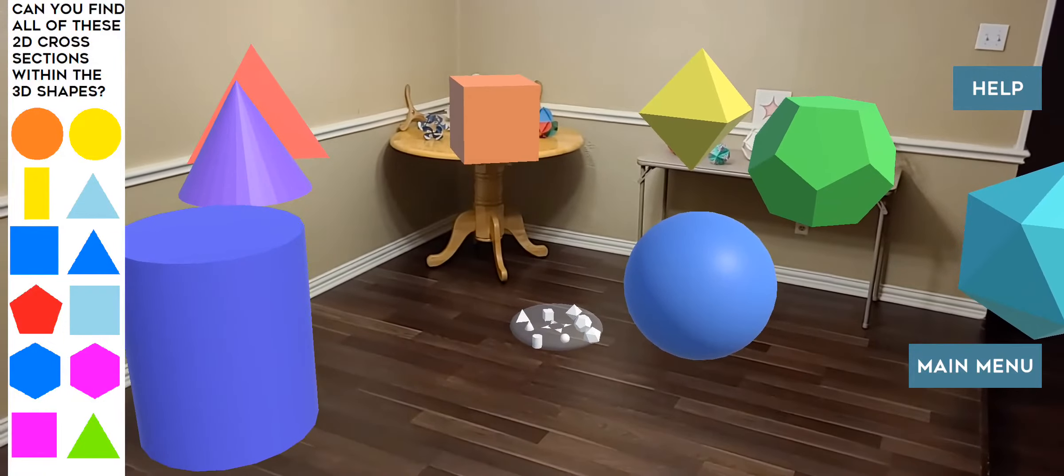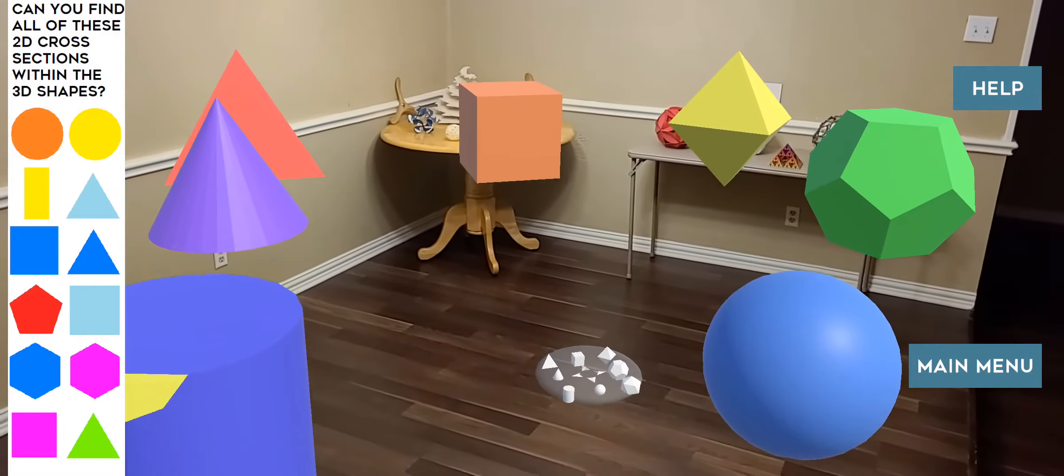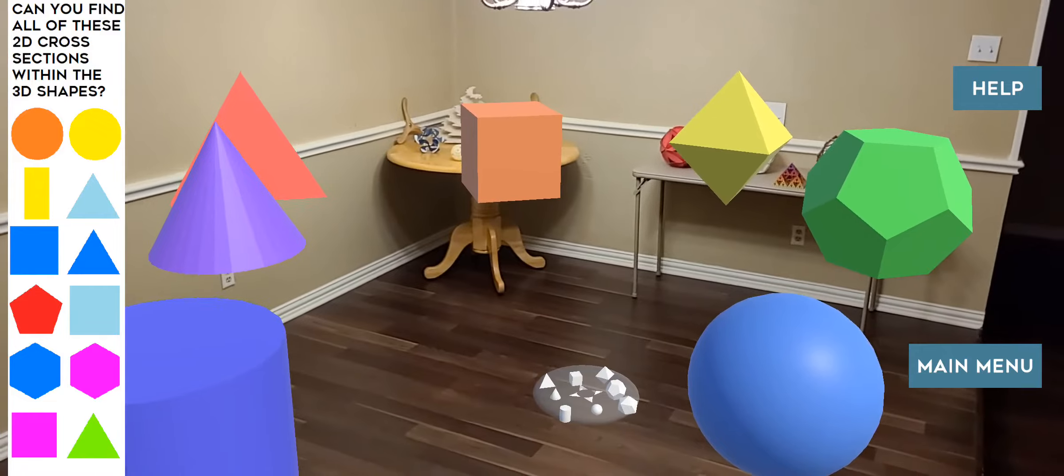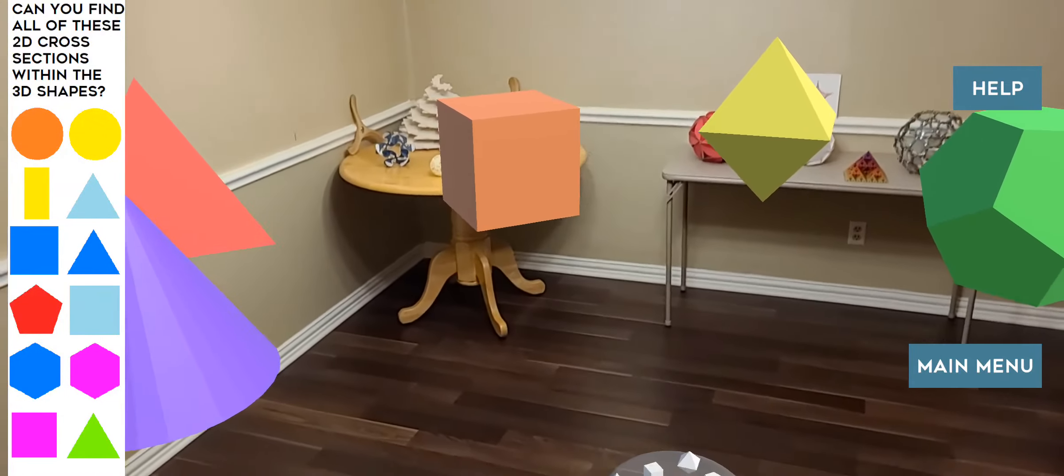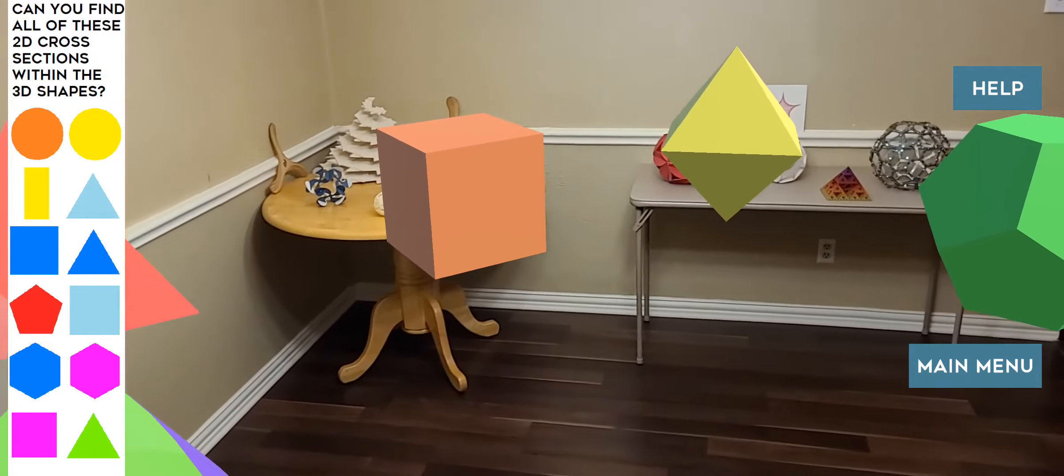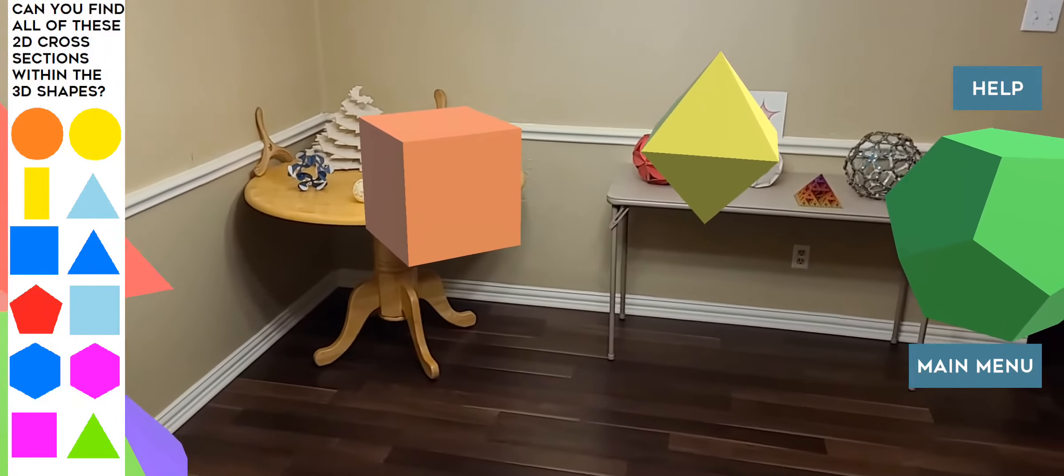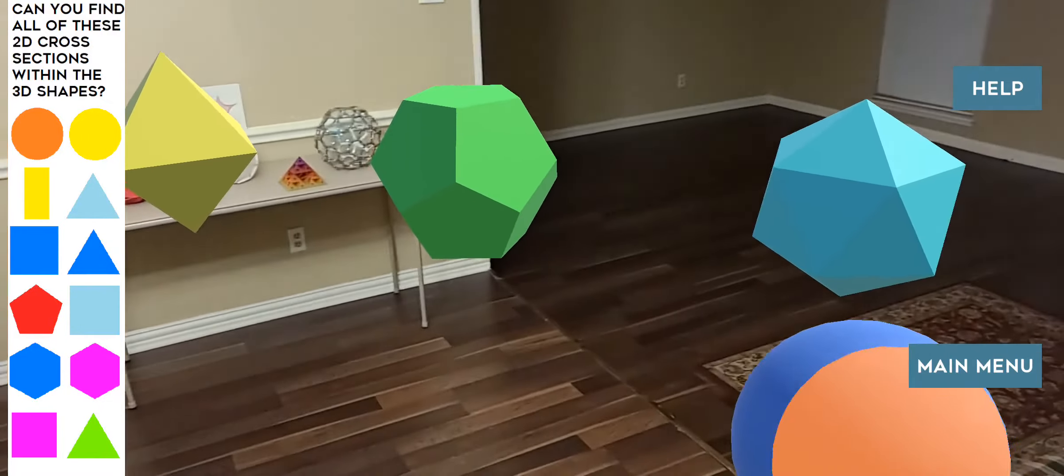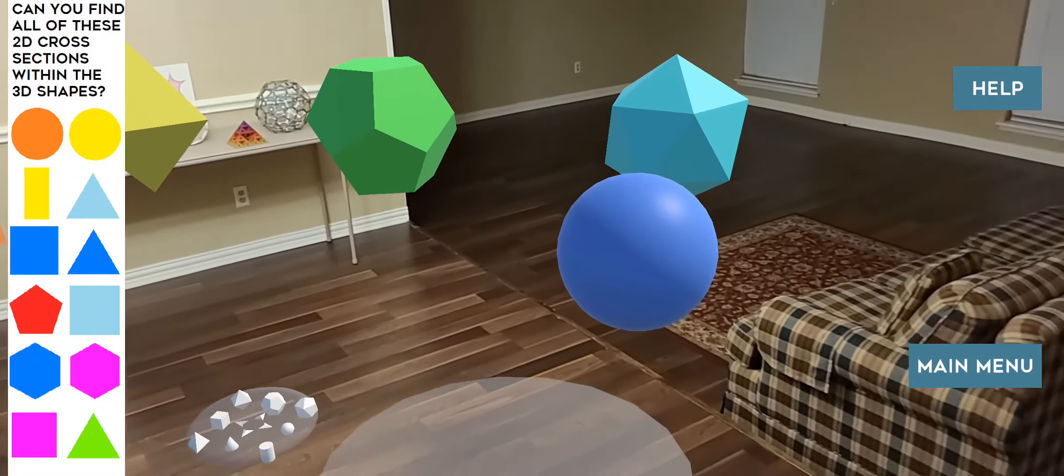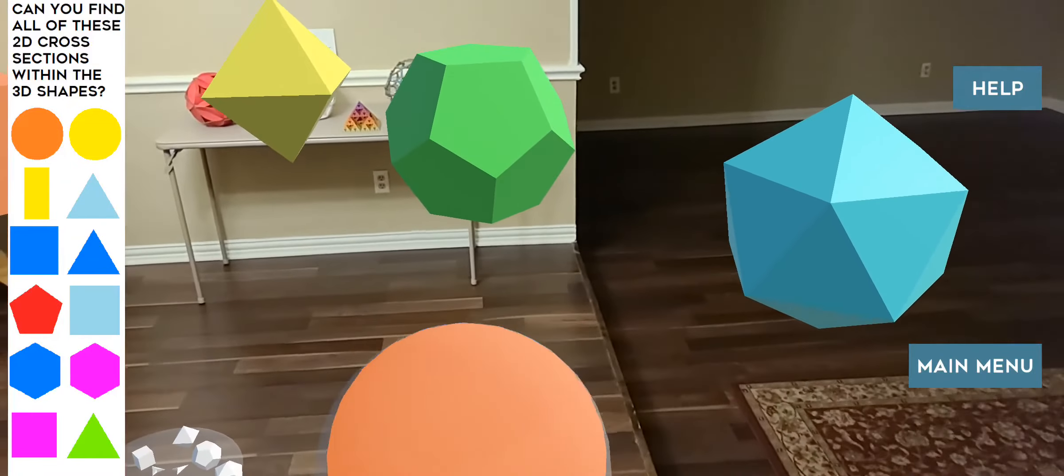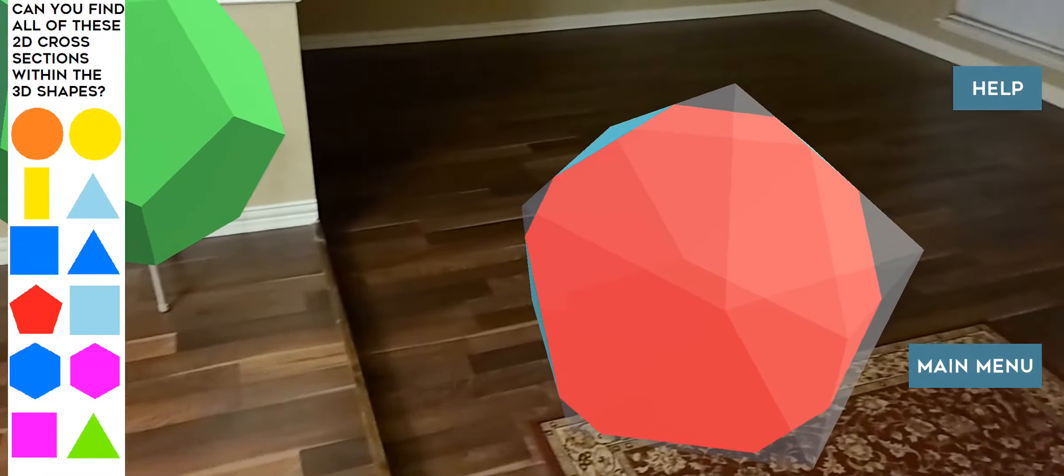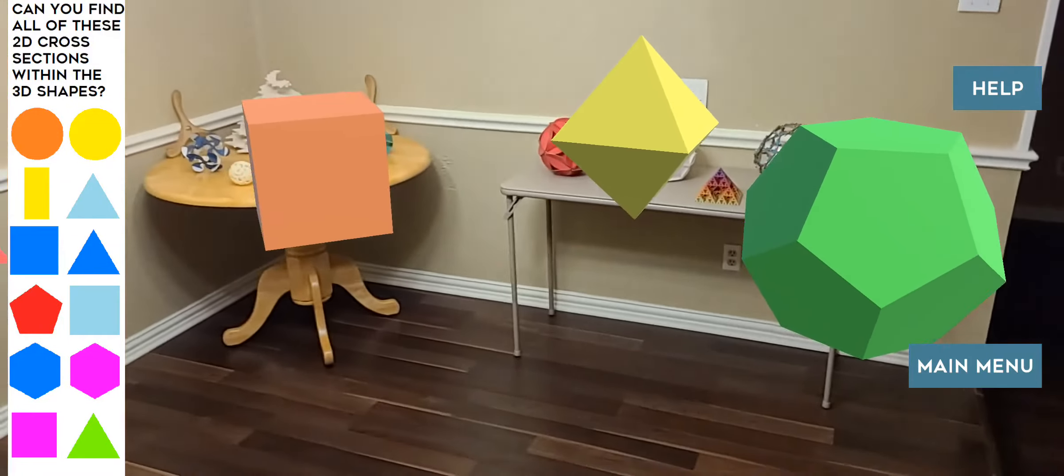The real challenge, I think, comes from trying to find some of these 2D shapes which are not as apparent in the 3D object. For instance, let's go for this target shape that's a blue regular hexagon. Now looking around these blue shapes, the possible target looks like this icosahedron over here, but we find that inside it's red, so that's not our target shape.